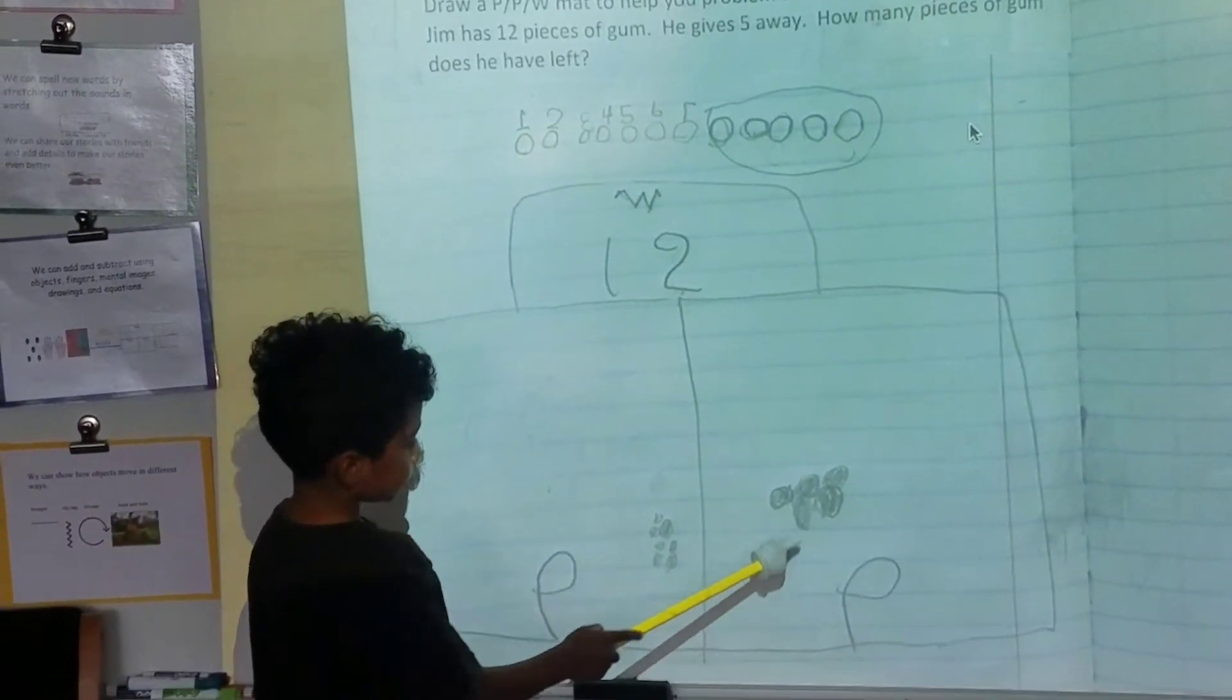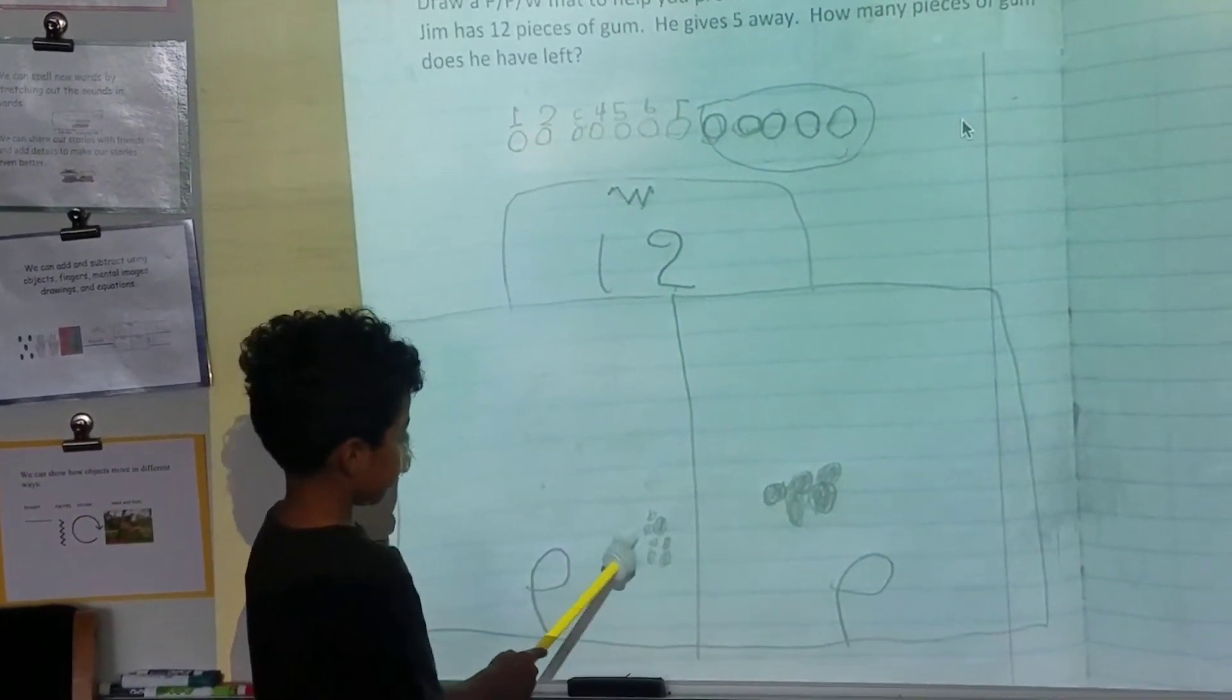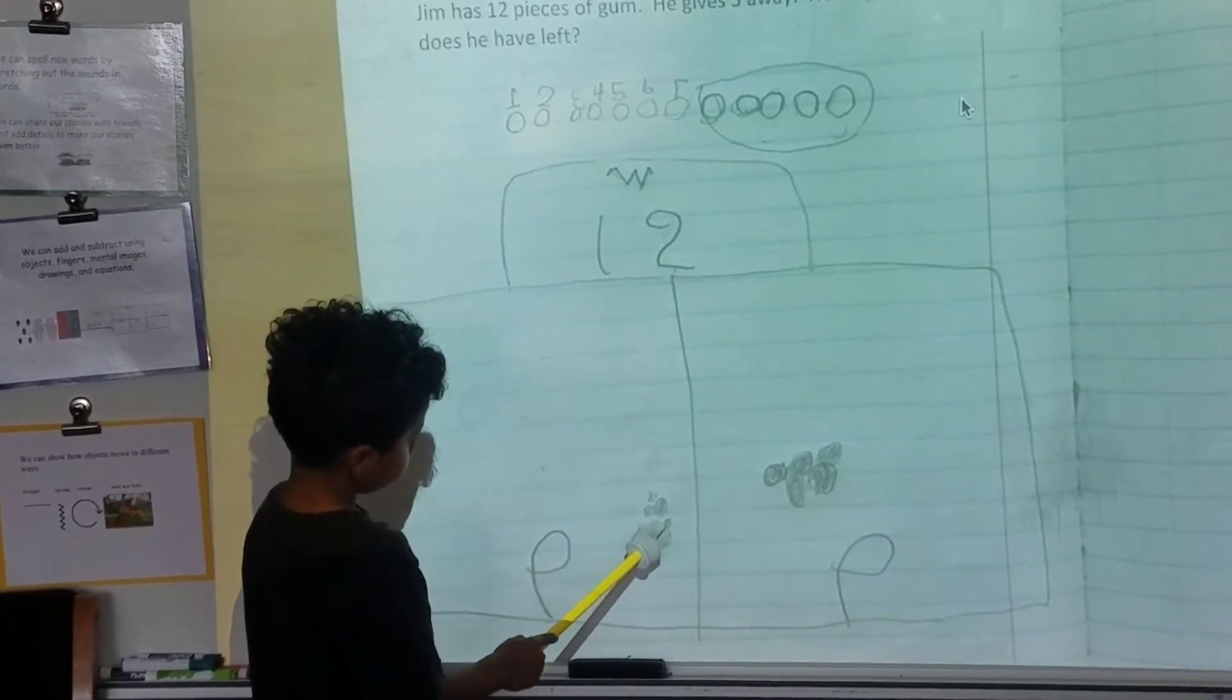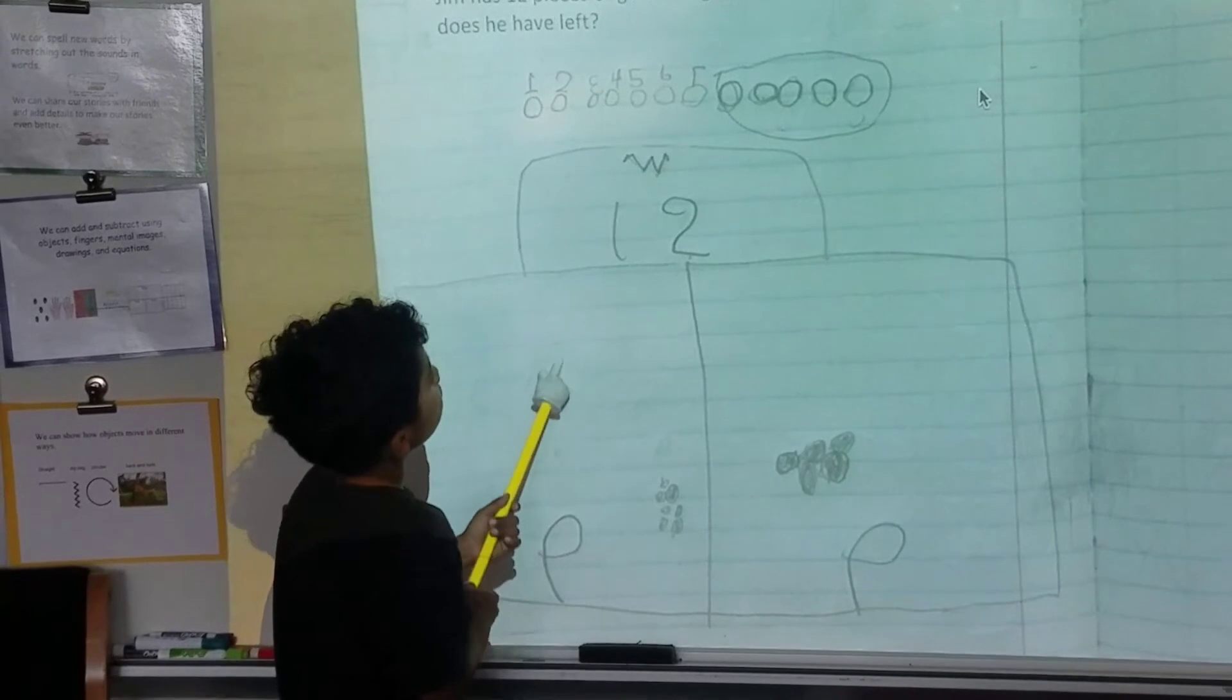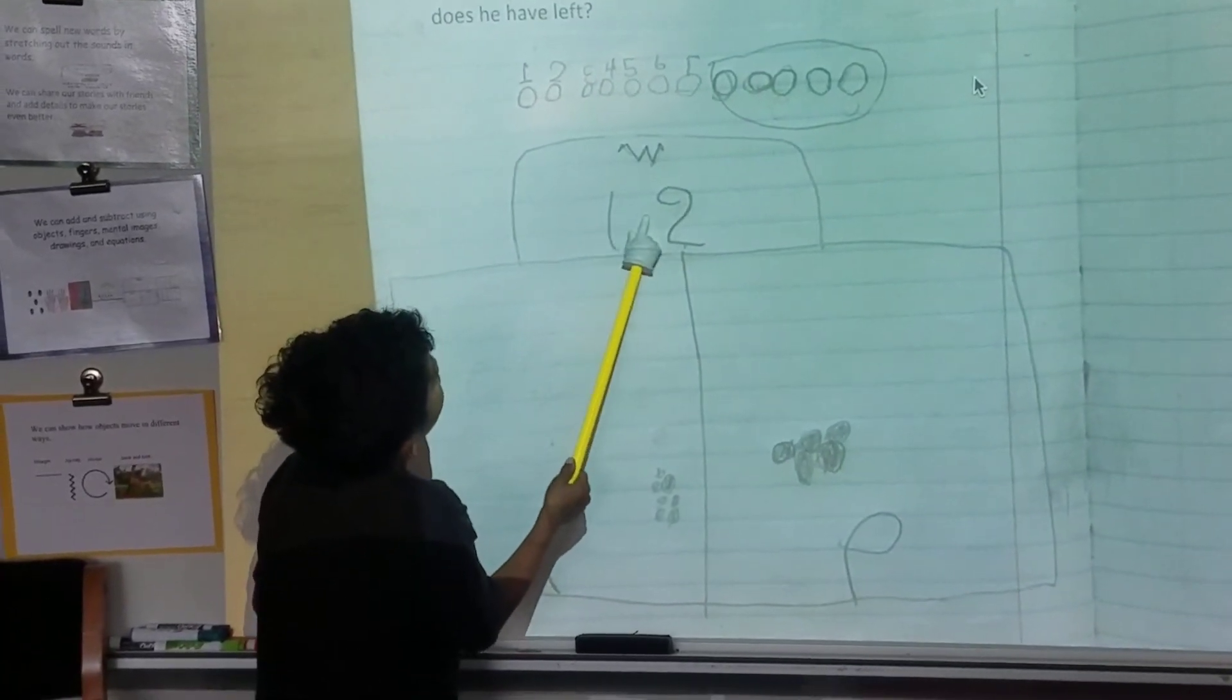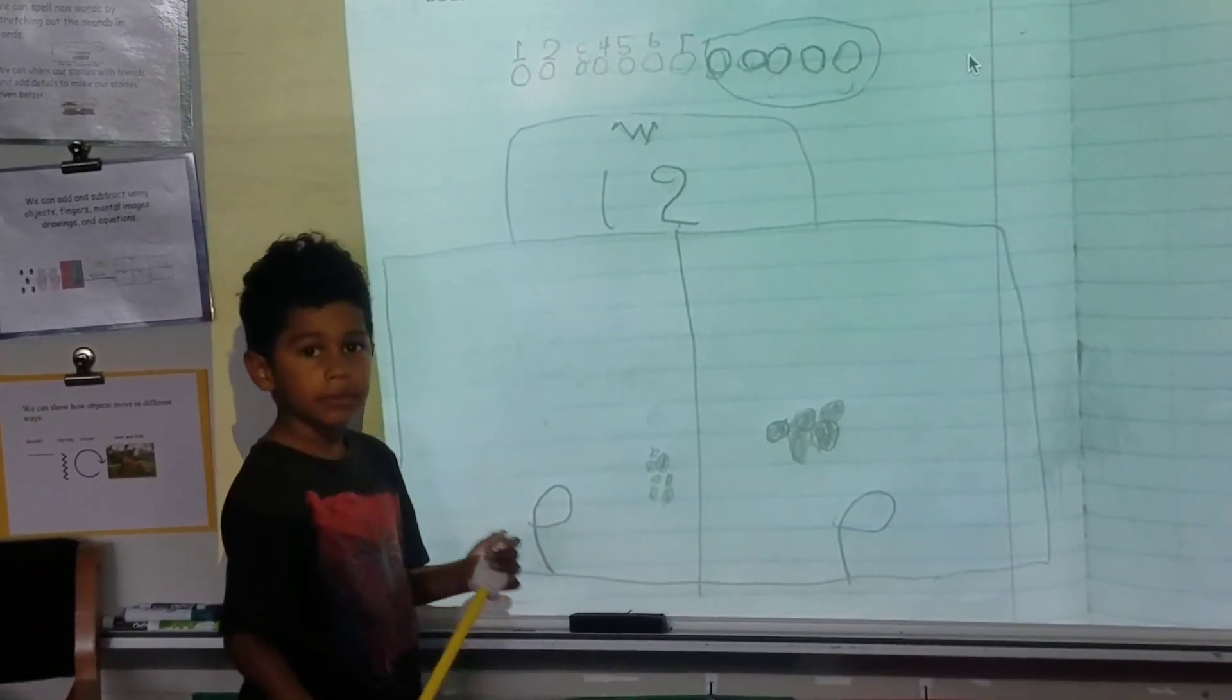And then I did 5 right here and 7 right here. And then it was already 12, so I put 12.